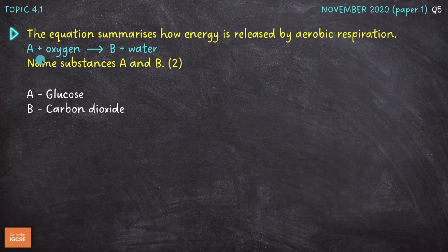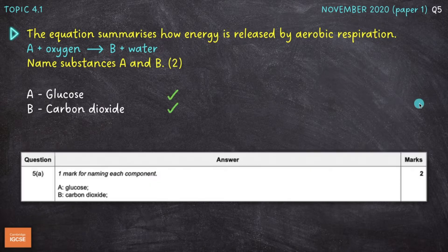Glucose combines with oxygen in the process of aerobic respiration. They undergo a series of chemical processes to produce energy, and our byproducts are carbon dioxide and water. There's the mark scheme, and we'll move on to question number two.